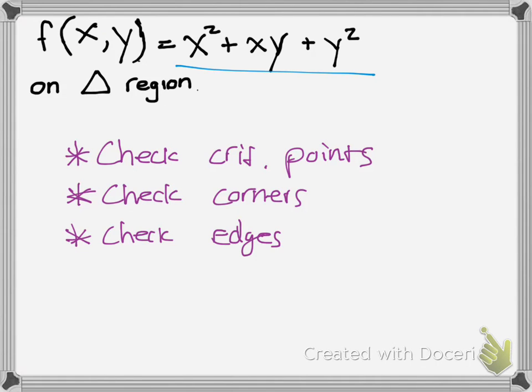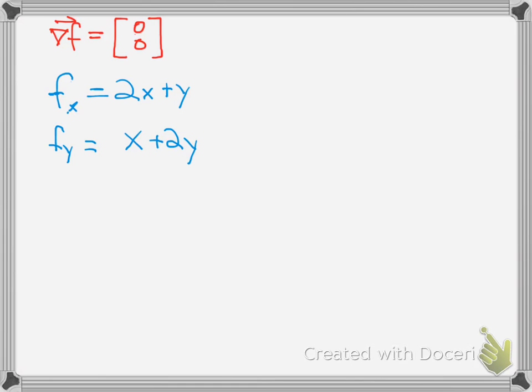If we look at our function here, the partial derivative with respect to x would be 2x plus y. And if we do it with respect to y, it would be x plus 2y. Remember you set that equal to 0. So this is the gradient vector set equal to 0.